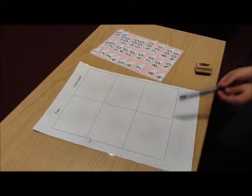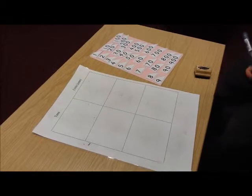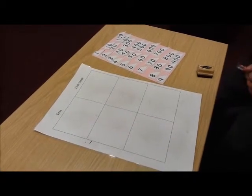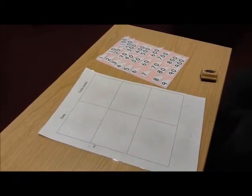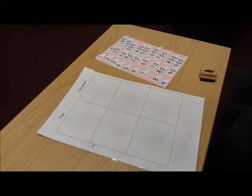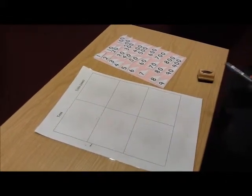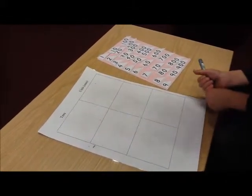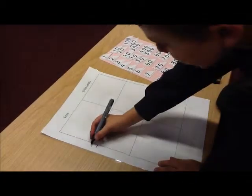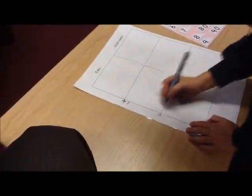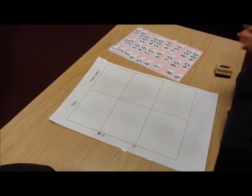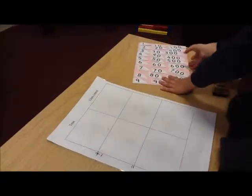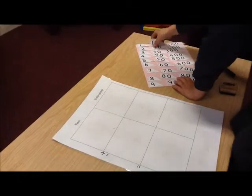This is a new tens and units board and we're going to do 21 add 13. First we're going to do our add and equals, and we're going to do our numbers with these. So we're going to get the 10 and put it in the tens and the one in the ones.